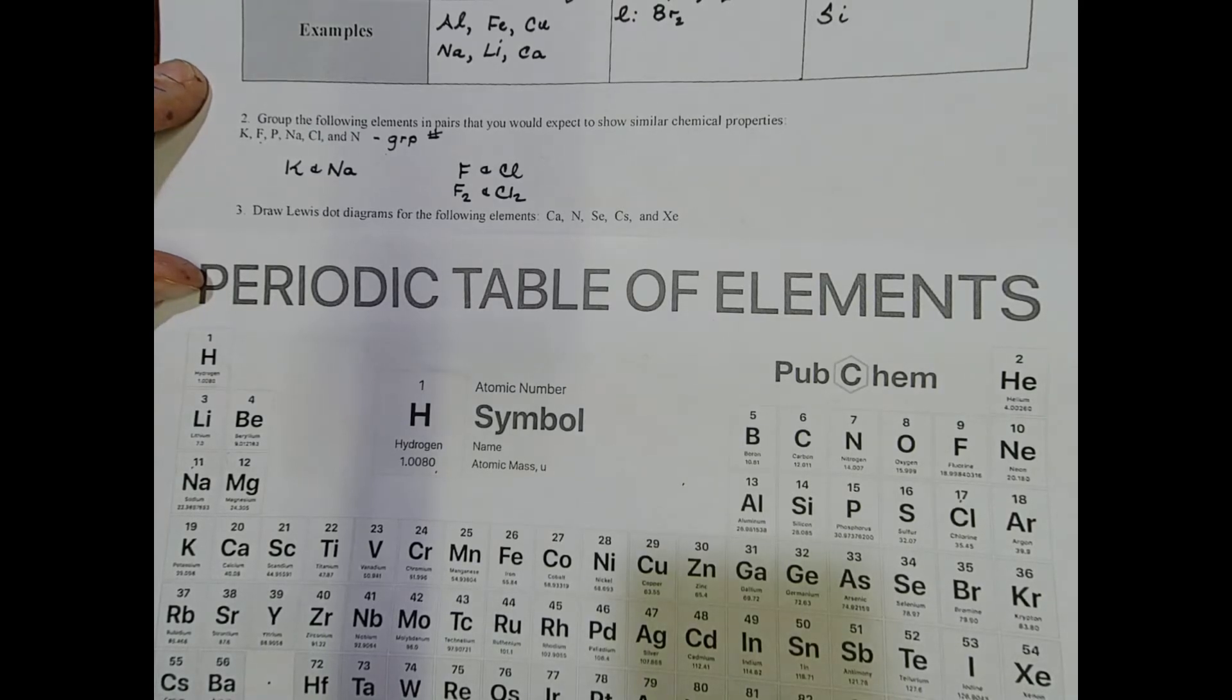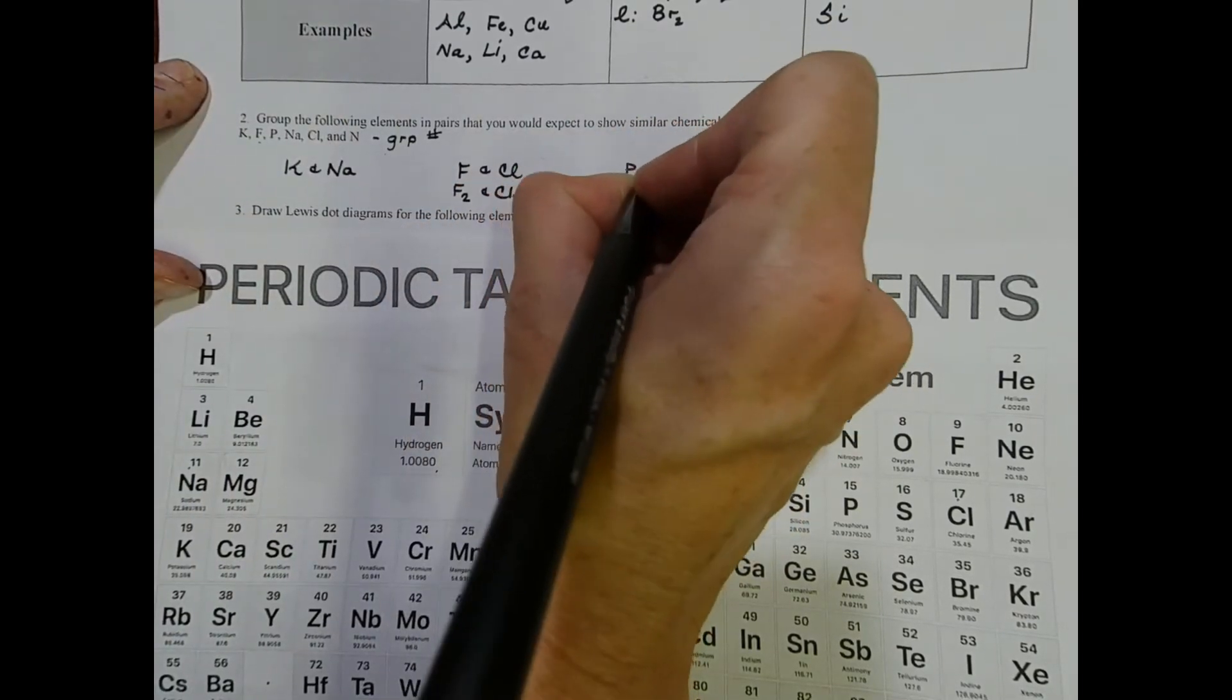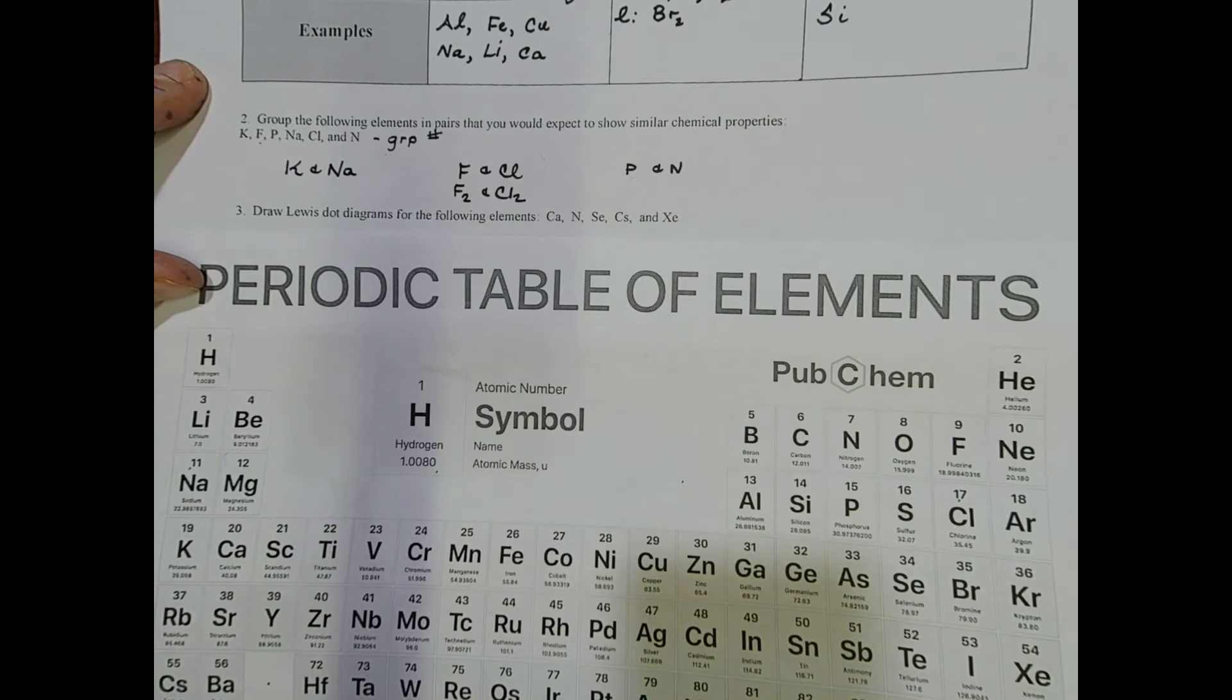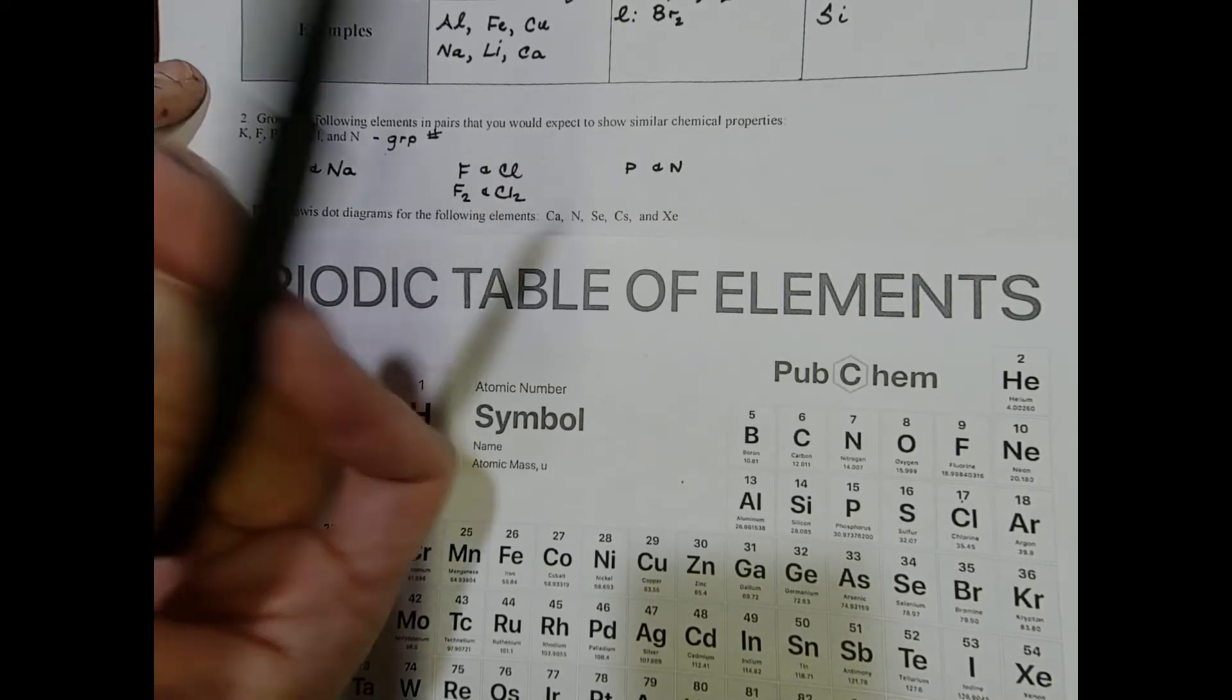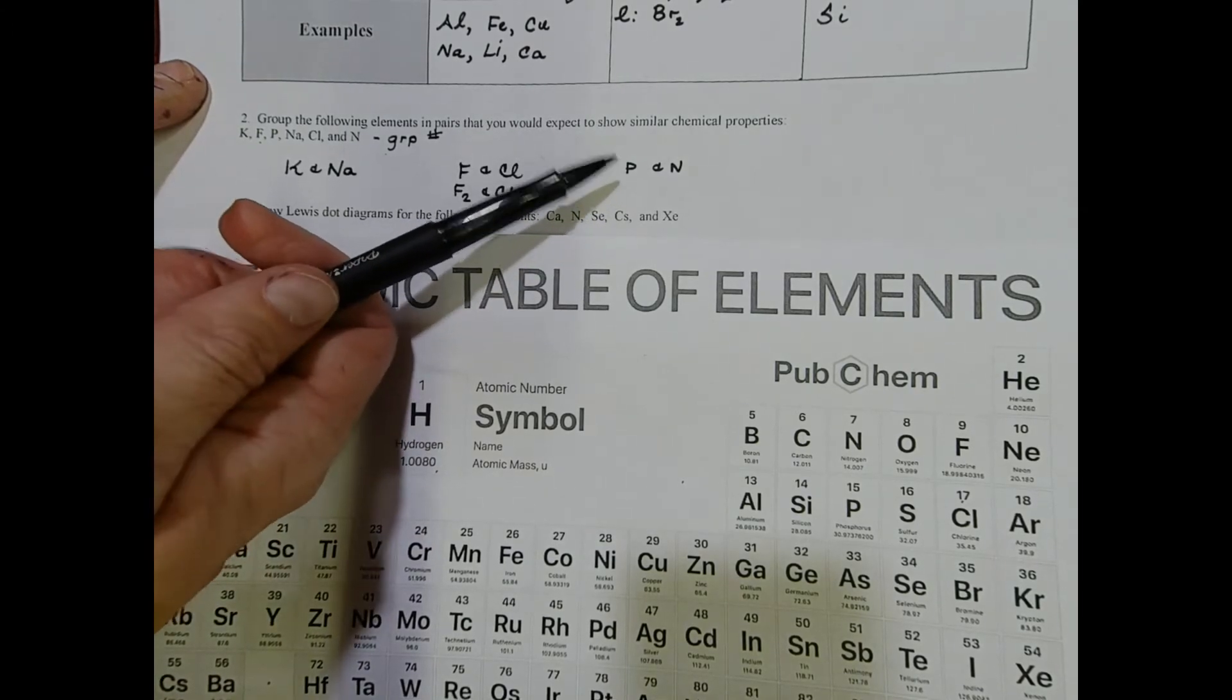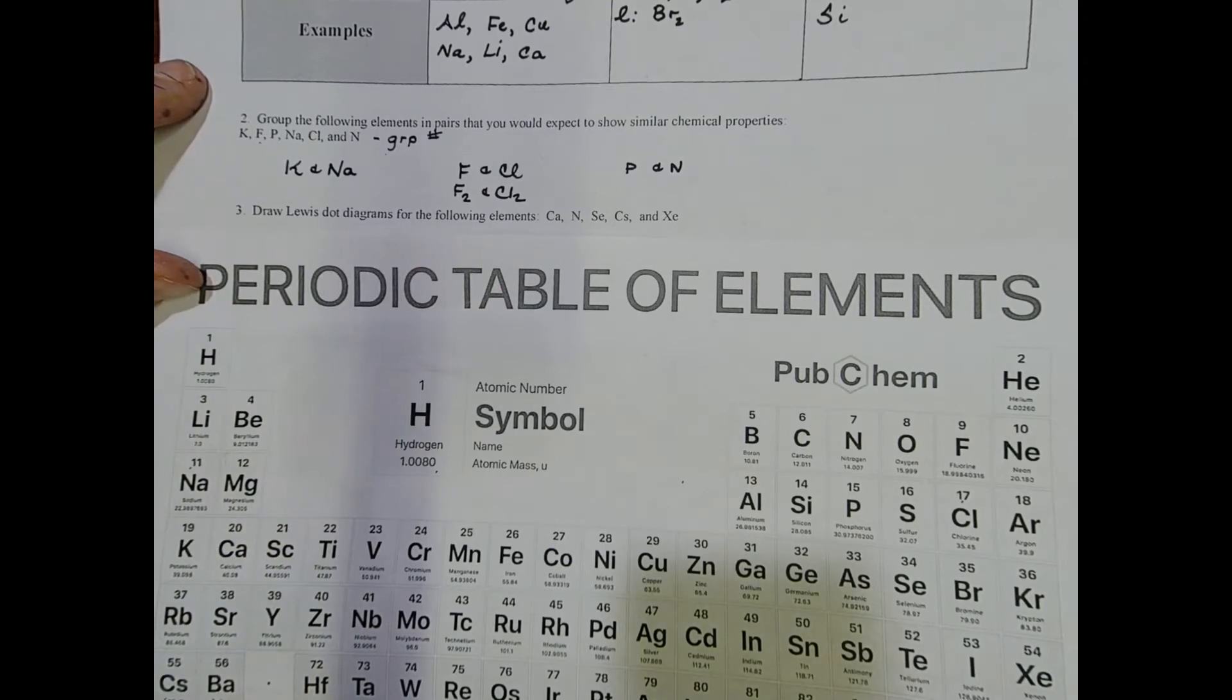Then we have phosphorus and nitrogen, which are group five elements. Group five tends to like to form covalent molecules a lot of the time, so you'll see these as we get more into the course serving as the central atoms in covalent molecules.